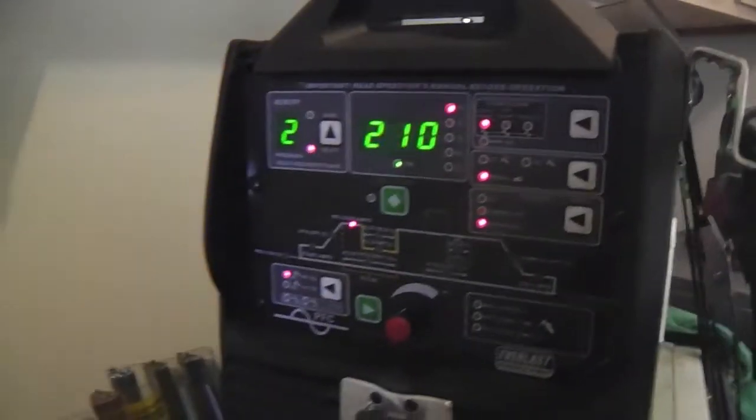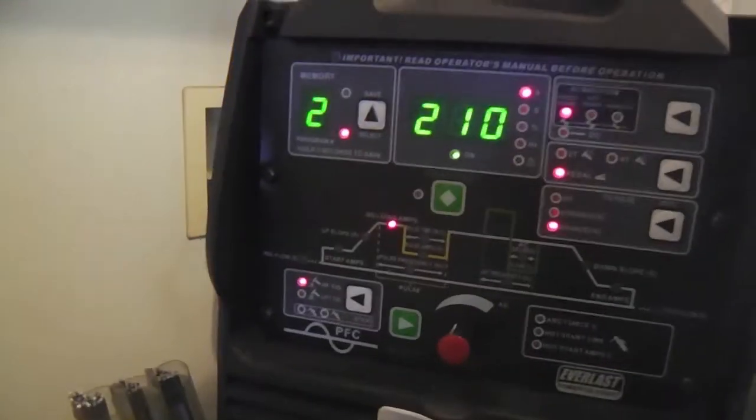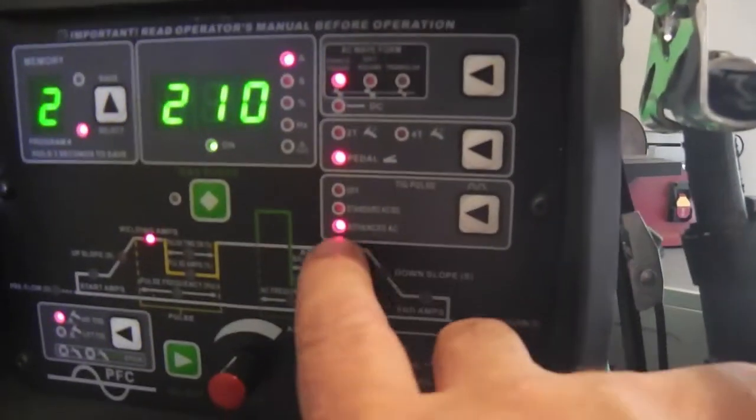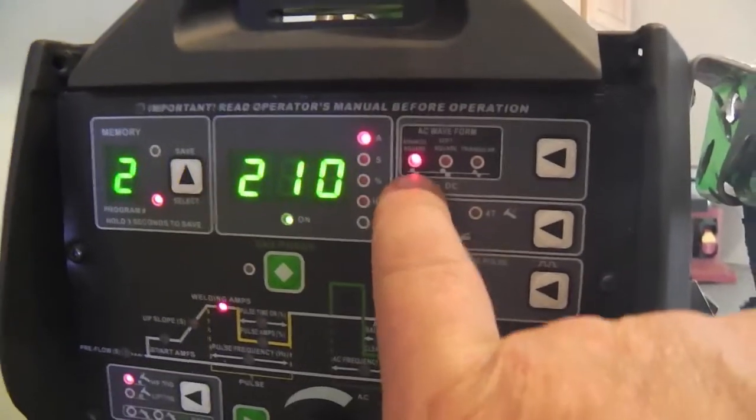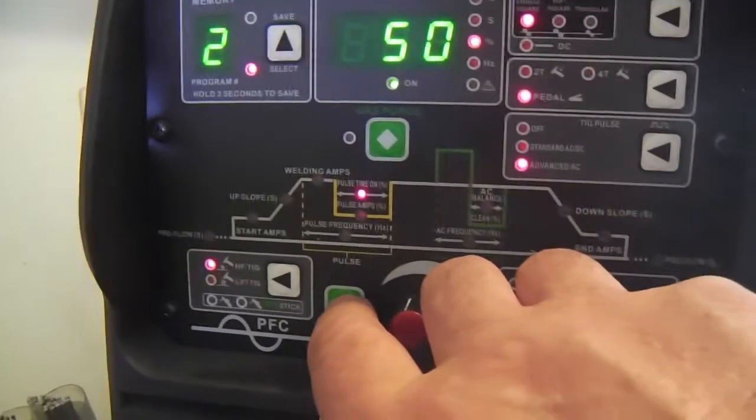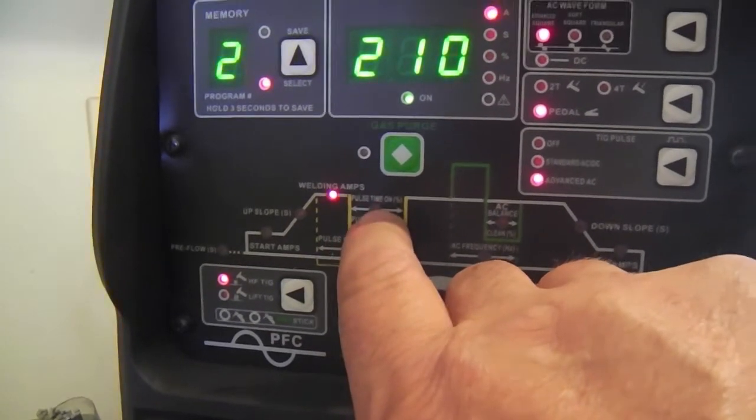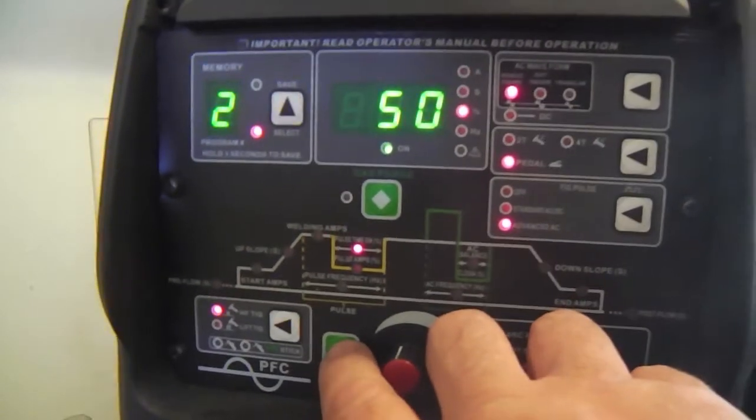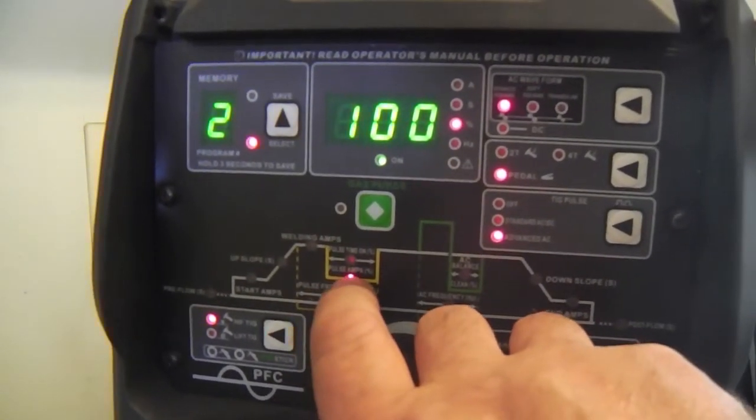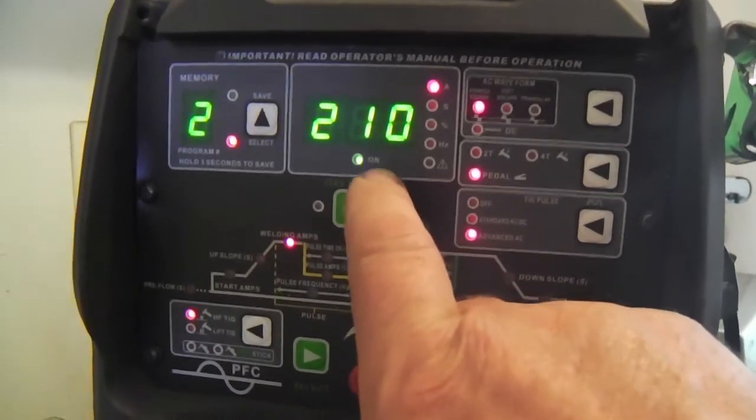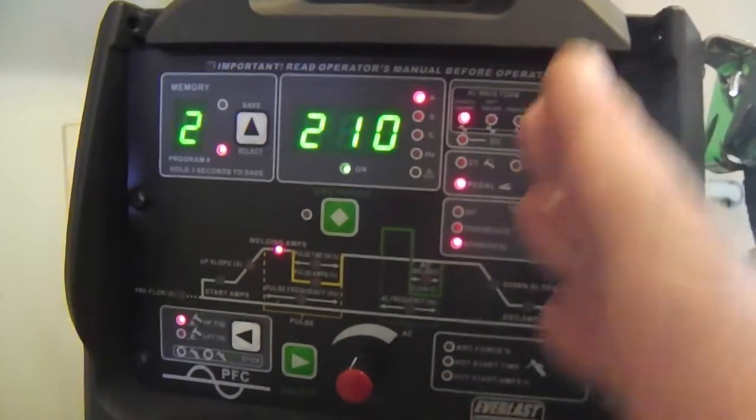Let me just run you through the settings on this machine. As you can see, the panel here, I've got it set on a memory setting already, number two. It's set to the advanced pulse, the square wave is what I'm going to use. That was 210 amps, and pulse time on is 50%. That was that half time. Half the time it's going to be on that DC.